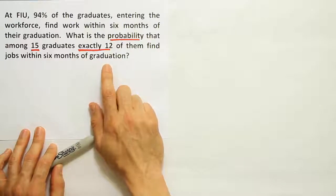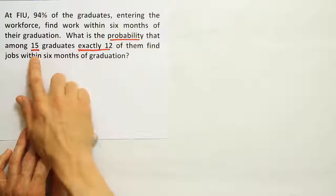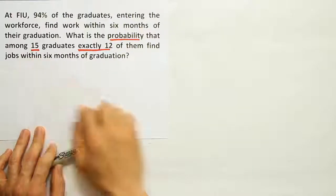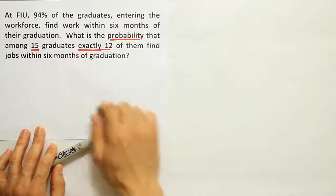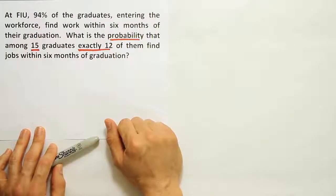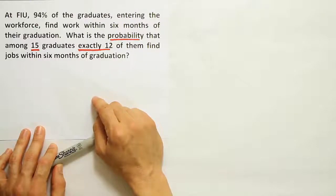You can check the conditions to see if it's binomial probability. There are a fixed number of trials. There are two possible outcomes—either they get a job or they don't. There's a constant probability of success: 94% of the graduates entering the workforce find work. The trials are independent. If one student finds work, it should be unconnected to whether another one finds work, assuming that they're randomly selected students.